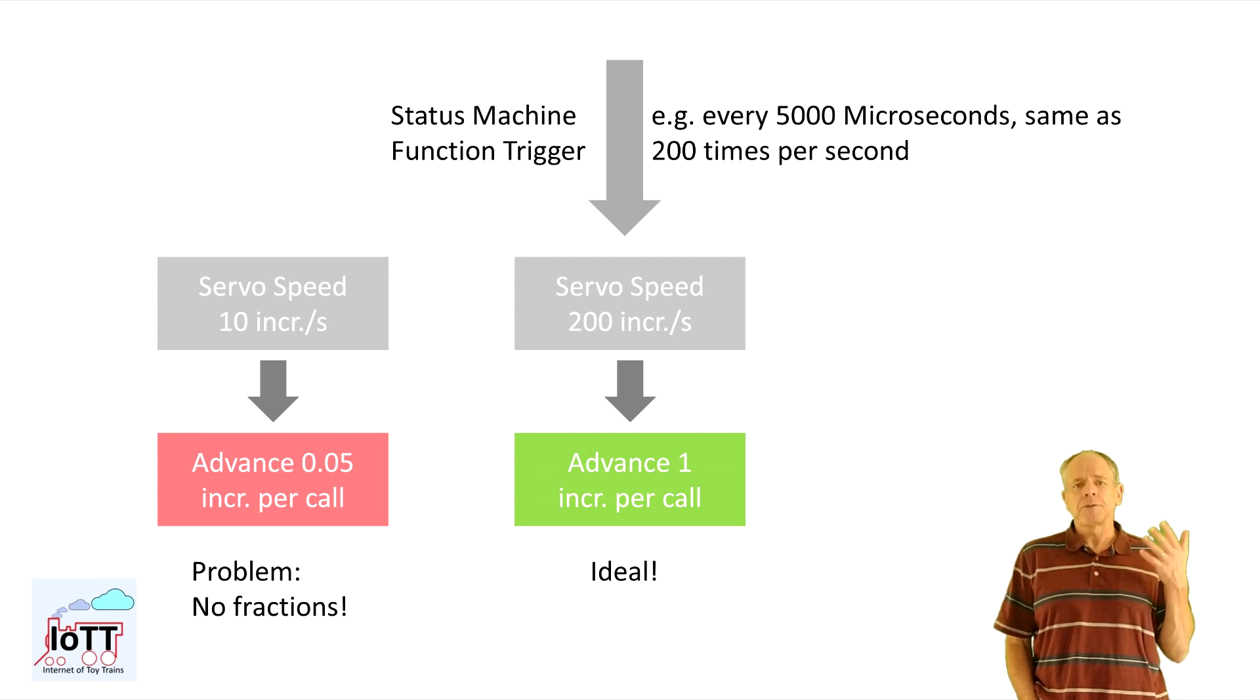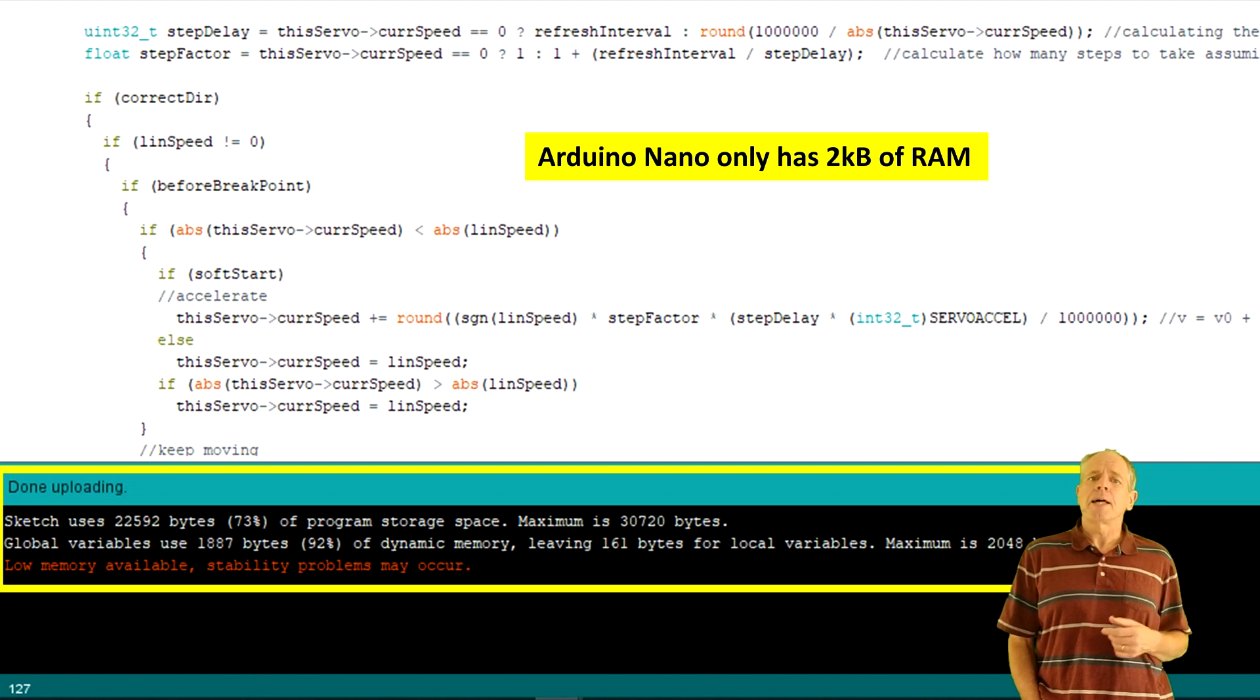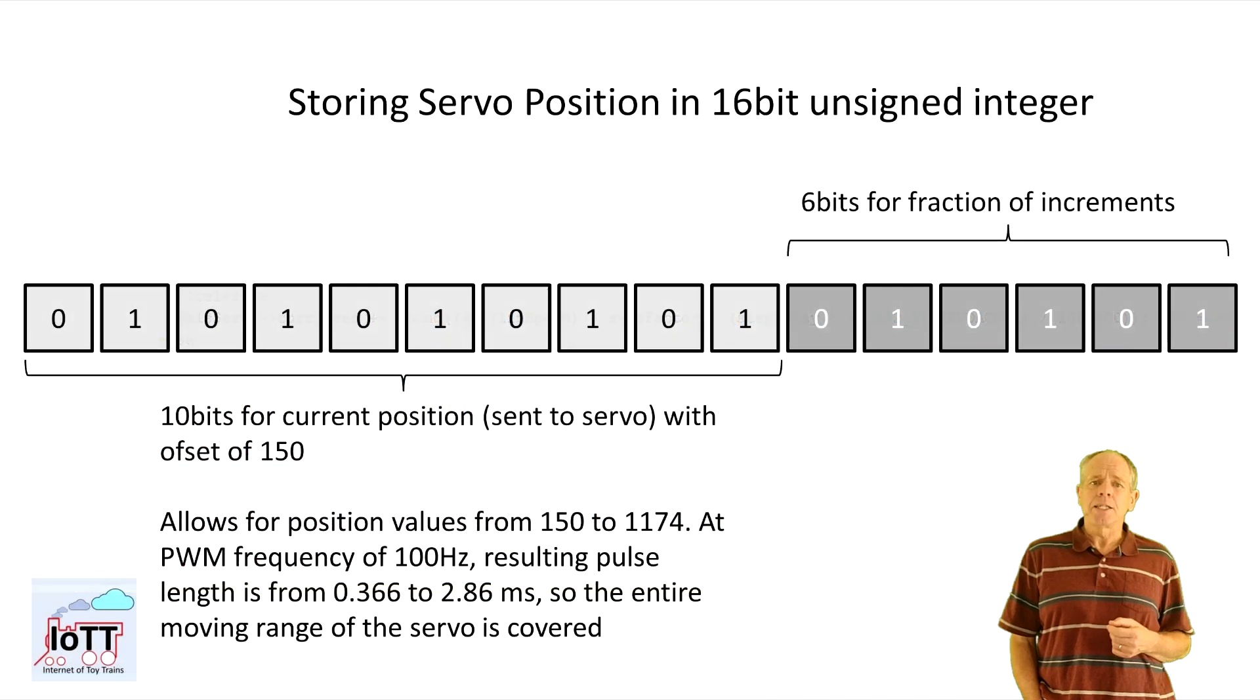To avoid that, I have to keep track of fractions in the software. The problem with that is that memory on the Arduino is very precious, and the floating-point variable takes 4 bytes. To avoid that, I settled with a 2-byte unsigned integer and multiply positions by 64. This gives me 10 bit for the integer value and 6 bits for the fractional part.